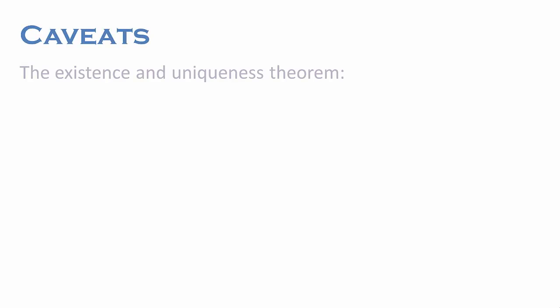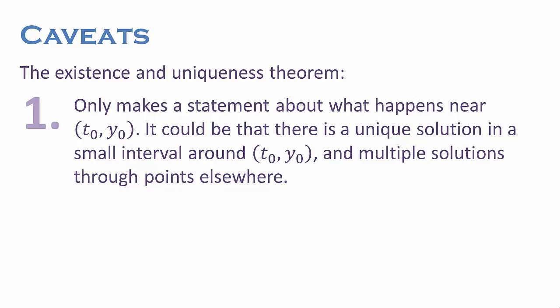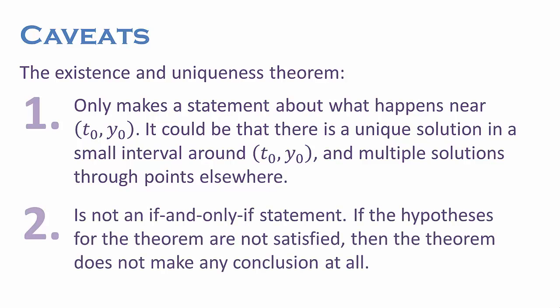When using the existence and uniqueness theorem, keep two things in mind. First, the theorem only makes a statement about what happens near (t0, y0), in some possibly small interval around this point — it doesn't say anything about what happens far from this point. It could be that there is a unique solution near (t0, y0) but multiple solutions elsewhere. Second, the theorem is not an if-and-only-if statement. If the hypotheses for the theorem are not satisfied, then the theorem does not make any conclusion at all.